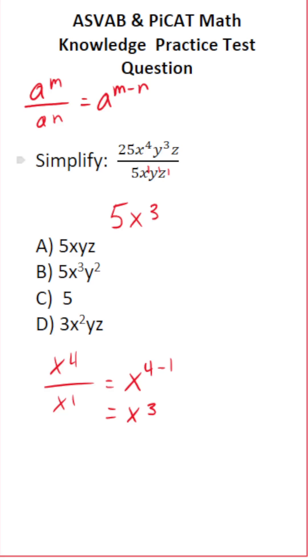Let's do our y's now. We have y to the third over y to the first. What does our quotient rule say? It says to subtract your exponents. So this is y to the 3 minus 1 which is y squared.